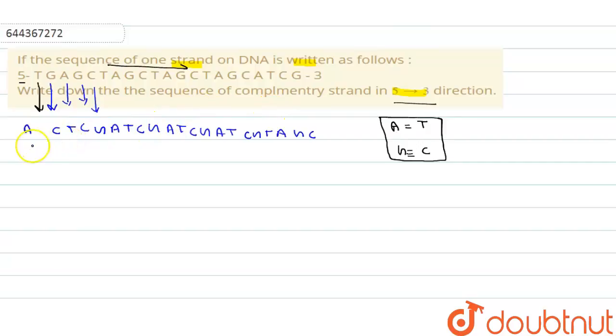So this is the complementary strand in the 5' to 3' direction. In this question, we need to replace A with T and G with C, and vice versa. If there is G we write C, if there is C we write G, A for T and T for A. So we need to do only this in the complementary strand. I hope you understand the solution. Thank you.